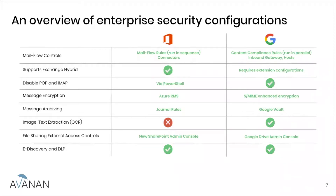We also took note that almost all enterprises nowadays are hybrid. With Google, hybrid support doesn't come built in — you need to work with the content compliance rules to make it work. As opposed to Office 365, which allows you to create hybrid connectors that are very similar to the connectors you get on your on-premises Exchange. So it's a Microsoft-to-Microsoft kind of thing.